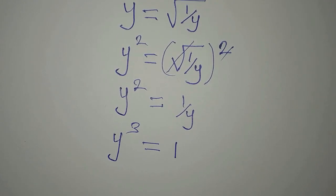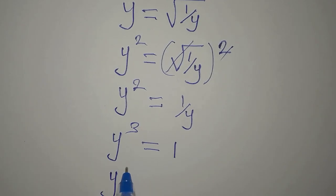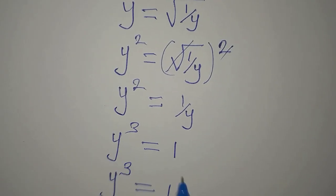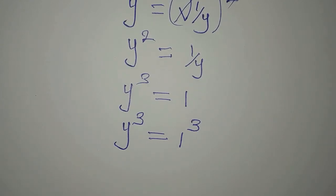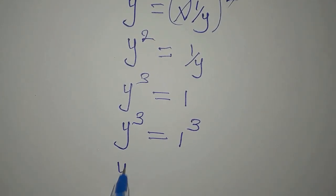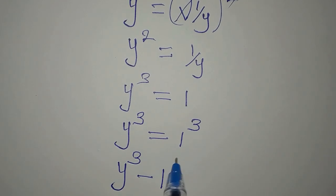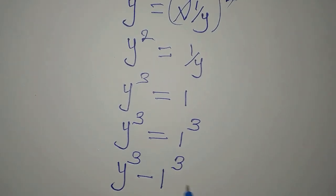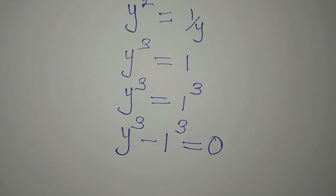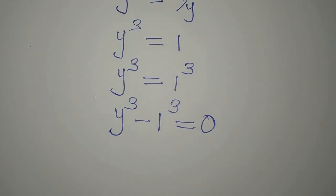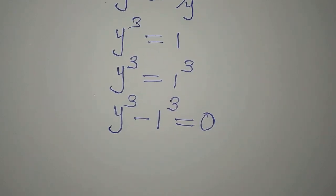Remember that we are looking for the three solutions, so we have y to the power of 3 equals 1. Taking this to the left, we have y to the power of 3 minus 1 to the power of 3 equals zero. Now we have a difference of two cubes.